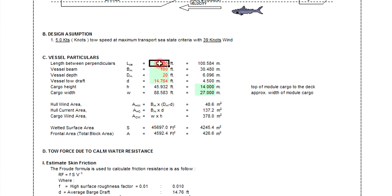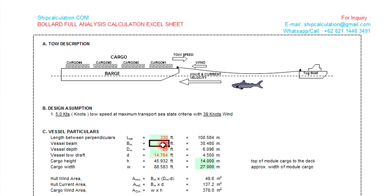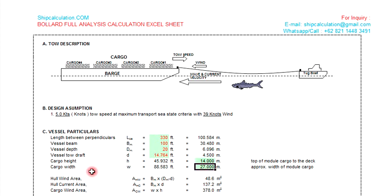The vessel particulars include the barge dimensions and also the cargo height. The cargo height is measured from the top of the cargo to the deck, and this is the cargo width. We need these to determine the wind area — both the hull wind area and the cargo wind area.